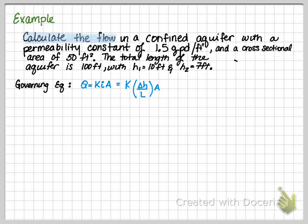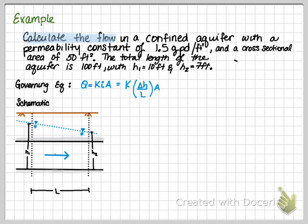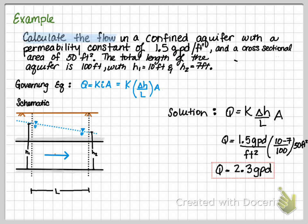So our governing equation for this is Darcy's law. From the schematic that we previously made, we know what the values are. We can solve by plugging in the hydraulic conductivity, the delta H over L, and the cross-sectional area. For this example, you'll get a flow rate of 2.3 gallons per day.